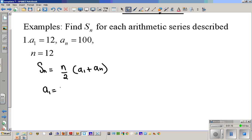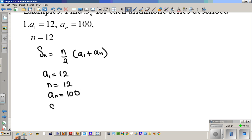Let's see what we have. We know that A1 is 12, N is 12, A sub N is 100, and SN is what we're looking for. So we have only one unknown, so we're good to go. Let's find the sum of this series. It's going to be N over 2, which is 12 over 2, times A1, which is 12, plus AN, which is 100.